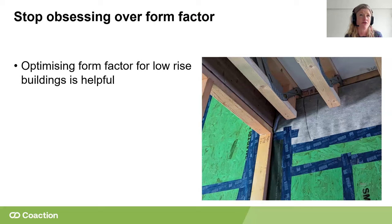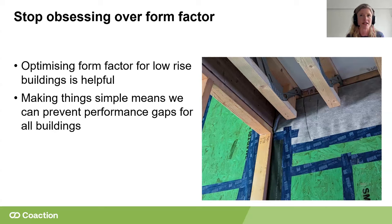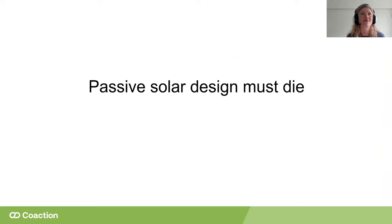In terms of form factor, it is helpful — particularly for very low-rise buildings — as a useful metric. But really, making things simple for all building types is always going to have the biggest impact on overall building performance. Especially when you don't have much control over the construction stages, simplicity gives you a much better chance of it working. Complexity creeps in everywhere — here's a classic picture of air tightness detailing on a project that looked super simple from the outside, and then you go to site and it makes you want to cry.